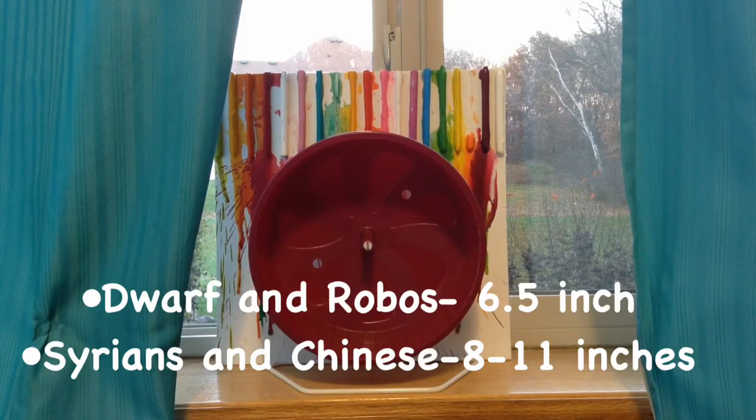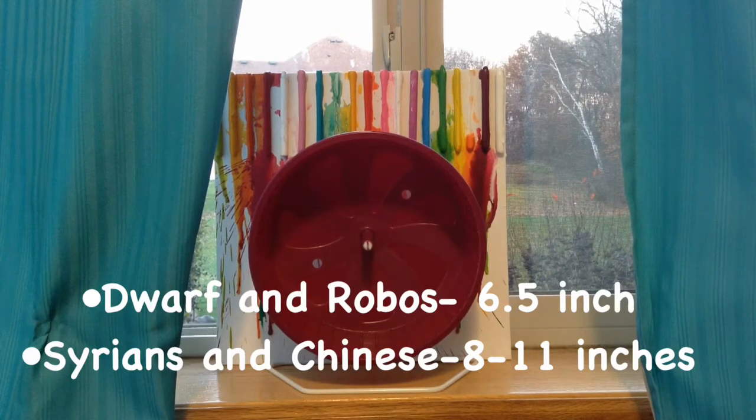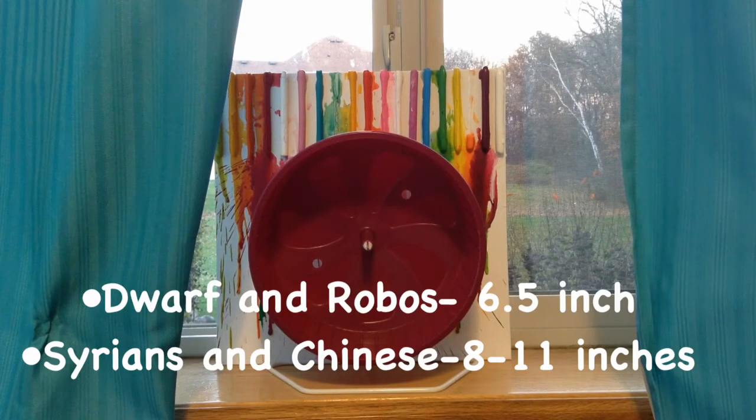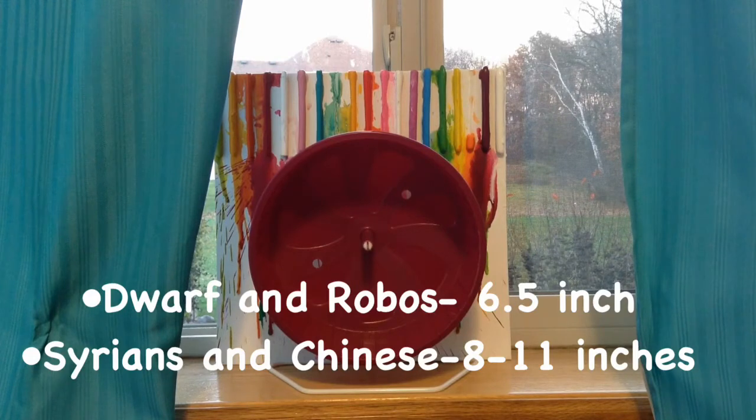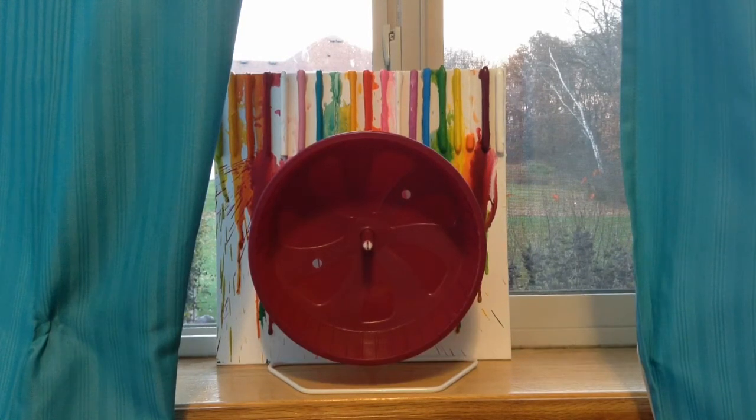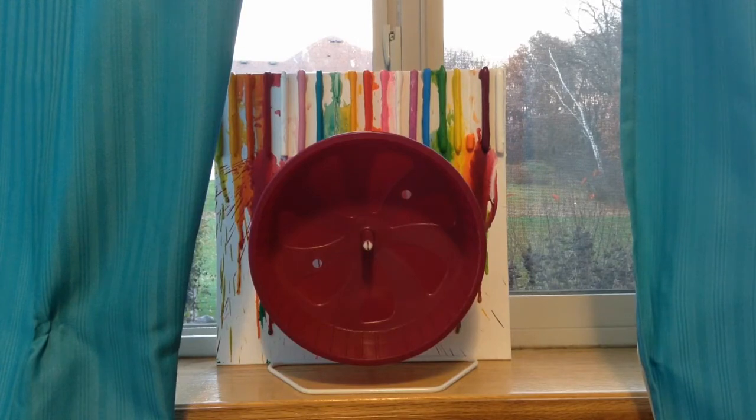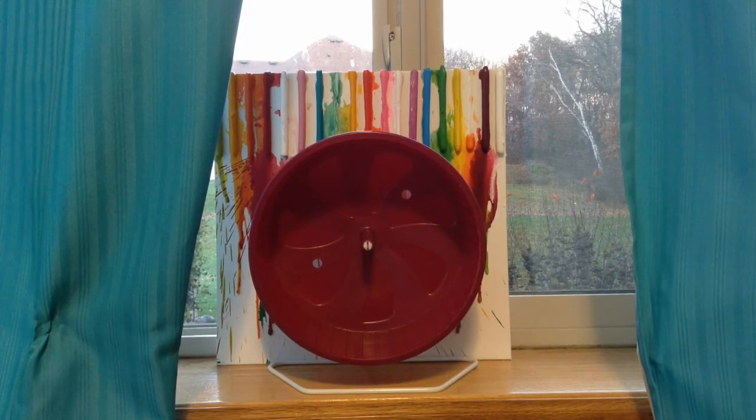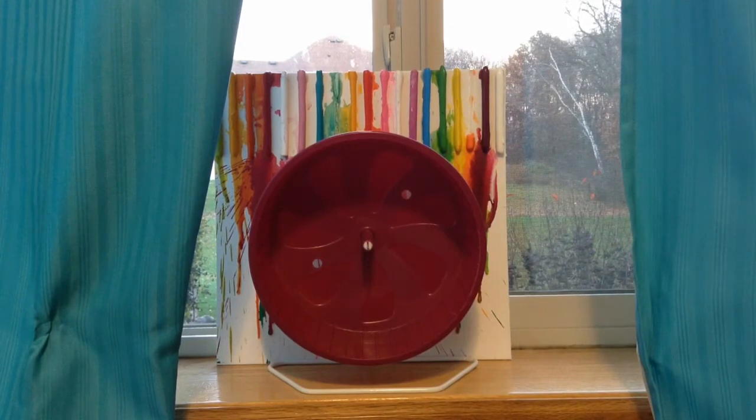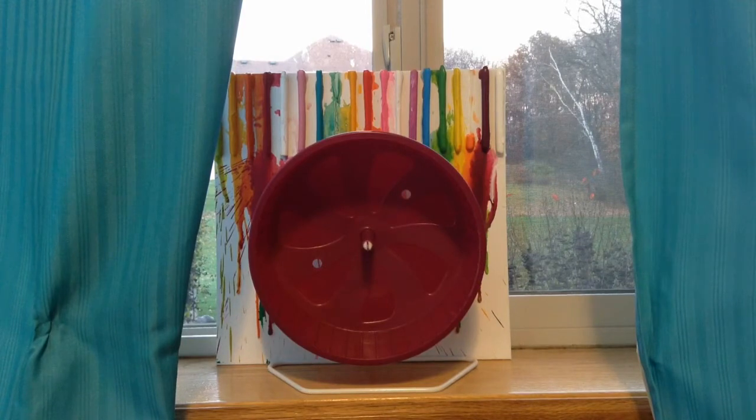Before we get started, for Robos and Dwarfs, the size recommendation is around 6 to 7 inches. Don't quote me on that, I'm not completely sure. Correct me if I'm wrong. For Syrians and Chinese hamsters, the recommended wheel size is 8 to 11 inches.